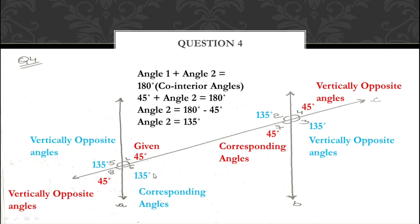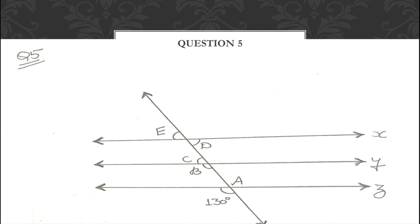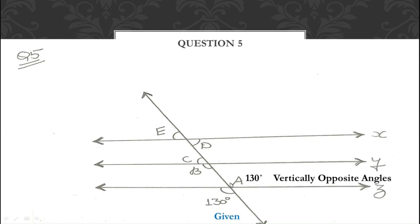Now let us move on to question number 5. Here also only one angle measurement is given and we have to find all the missing angles. There are 3 parallel lines: line X, line Y, and line Z, and one transversal cutting all three. The given angle is 130°. If this is 130°, then angle A is also 130° because they are vertically opposite angles.